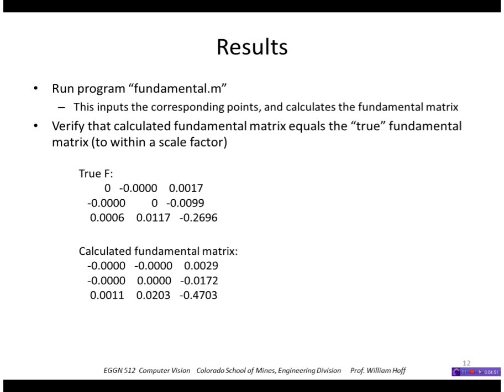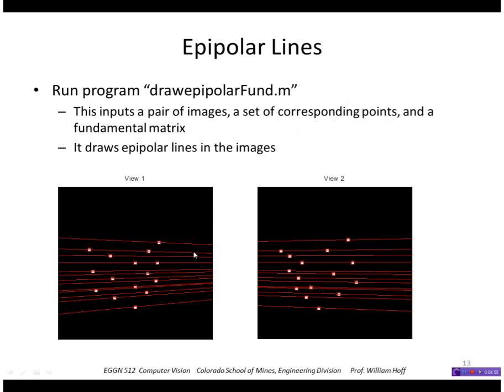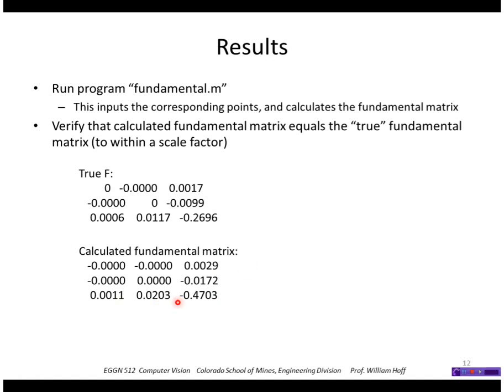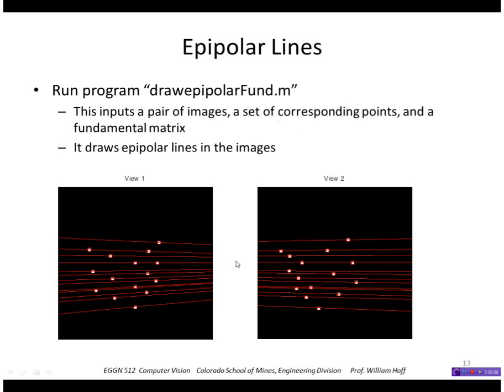The results of running that generated this fundamental matrix. If we compare that to the ground truth one, we can see that it's the same within a scale factor. The scale factor is about two. We can also verify that the epipolar lines are correct by taking a point, for example in view two, and generating the line in view one and verifying that the corresponding point lies on that line.